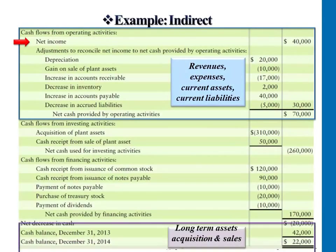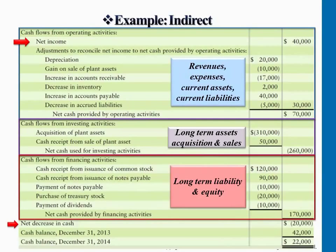We're going to go into examples later. I just want to show you what an entire statement of cash flows looks like. The middle part is investing activities — any cash a company used to purchase long-term assets, or any cash received from selling long-term assets. Then we have financing activities: everything relating to long-term liabilities, such as paying off or borrowing against long-term notes payable, or issuing or buying back stock. Any cash increase or decrease goes into that third section.